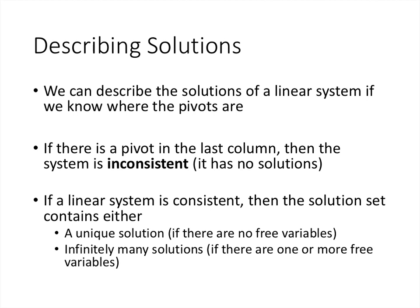What we really need to know about our matrix is where the pivots are. If there is a pivot in the last column, then the system is inconsistent — it has no solutions. A system is consistent if it has at least one solution, and inconsistent if it has none. If the system is consistent, then the solution set either has a unique solution, which happens when there are no free variables, or infinitely many solutions if there are one or more free variables — because every value of the free variable gives another solution. So there are really three possibilities: no solutions, one solution, or infinitely many solutions — and we can determine which scenario we're in simply by knowing where the pivots of the matrix are.